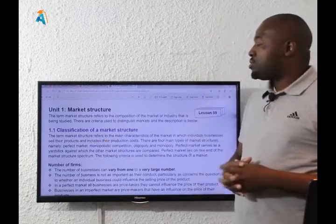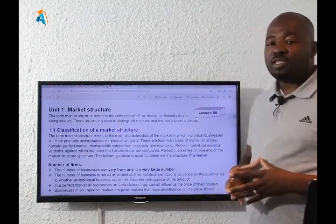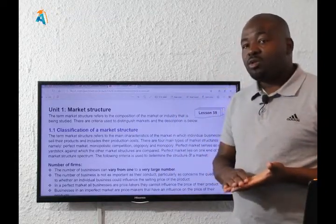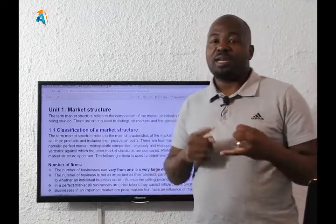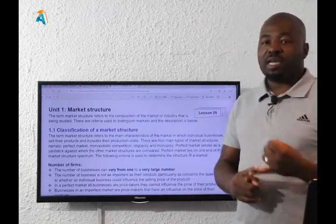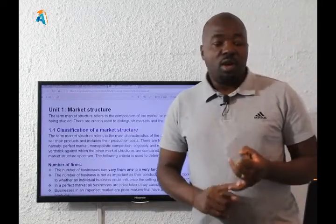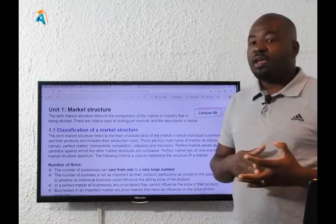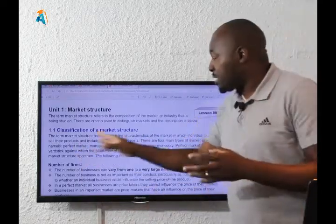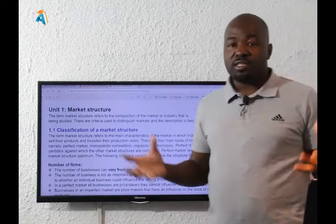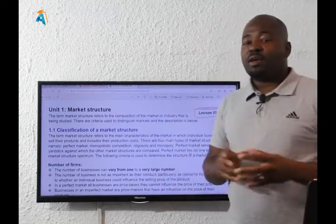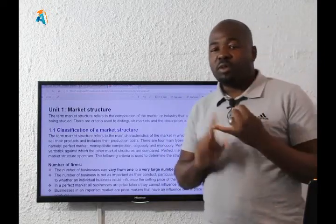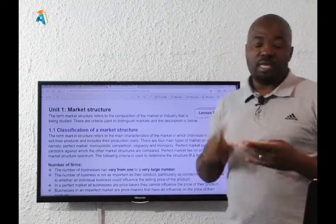Since we are going to be doing markets, we have four main types of market structures. When you do dynamics of perfect markets, we are only doing one market structure, which is perfect market, or a perfectly competitive market. When we go into dynamics of imperfect markets, we are going to do oligopoly, monopoly, and monopolistic. So all in all, we have four: perfect, monopoly, oligopoly, and monopolistic.